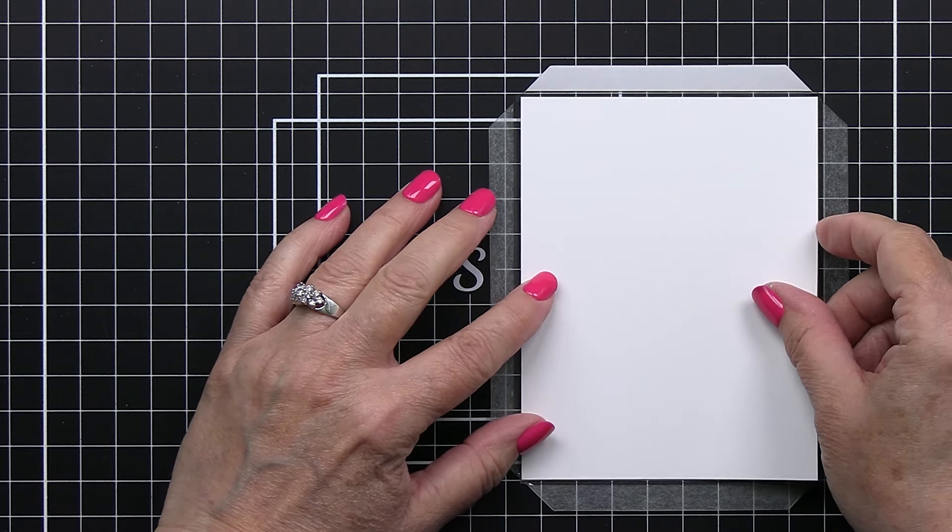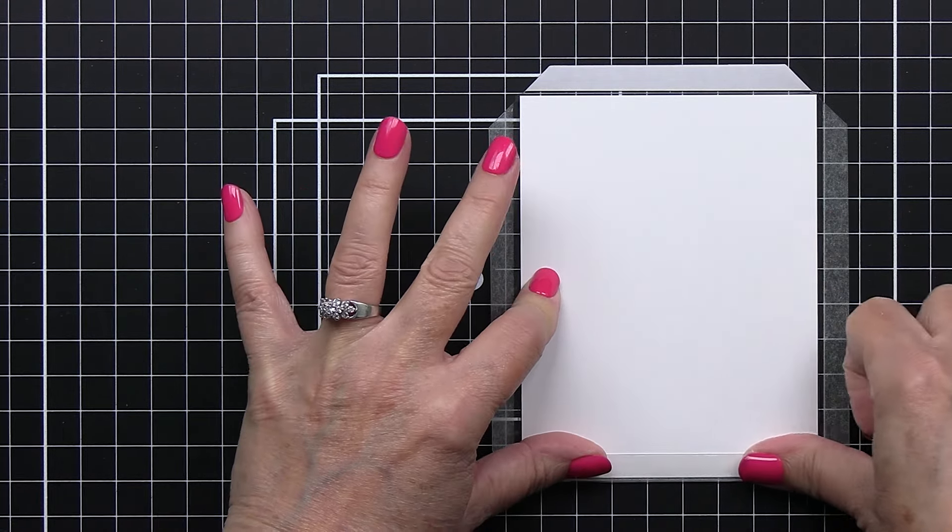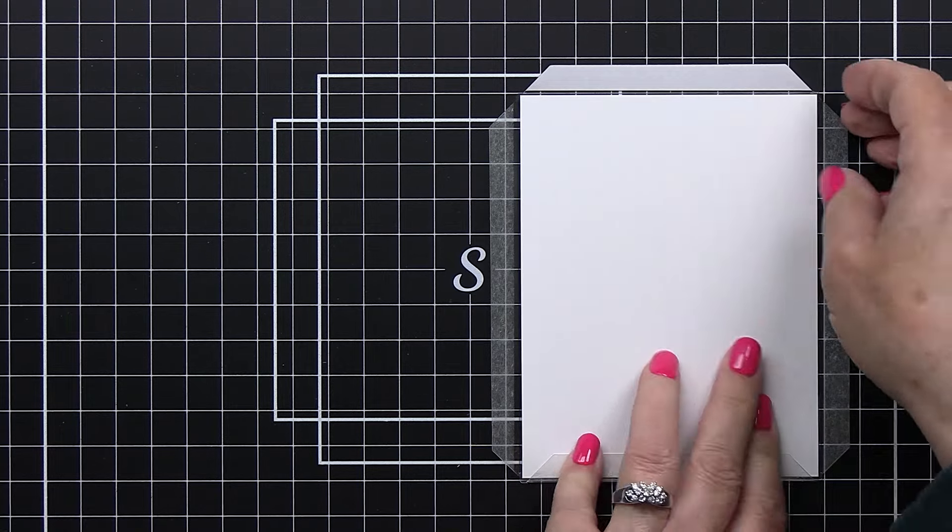Then you just take off that release paper off the edge of your shaker pocket here. You fit your paper in and then you can close up three of the sides. I like to leave that top edge open to add my shaker pieces.